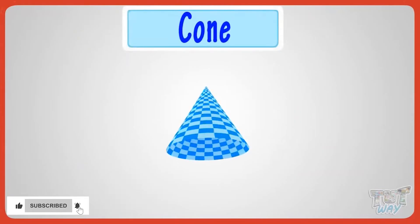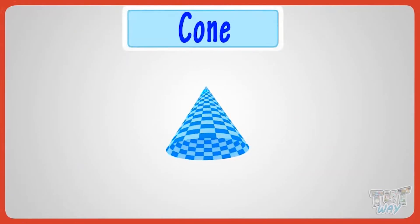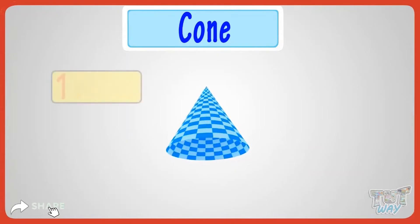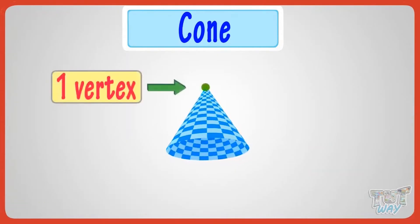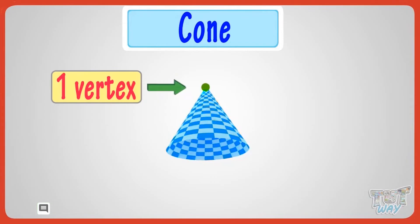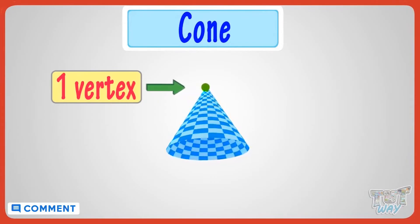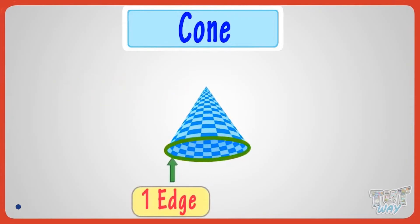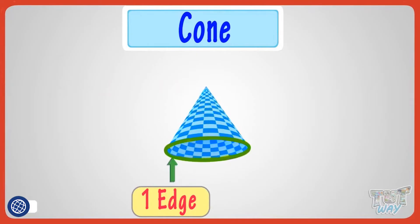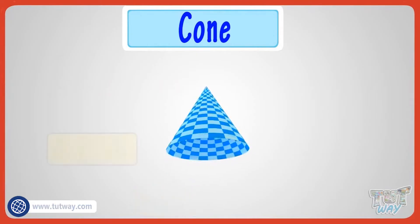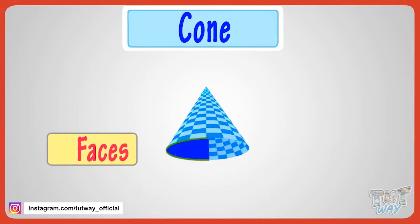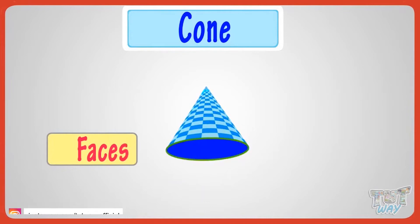This is a cone. It has only one vertex, which is the tip of the cone. It has only one edge, which is round in shape.